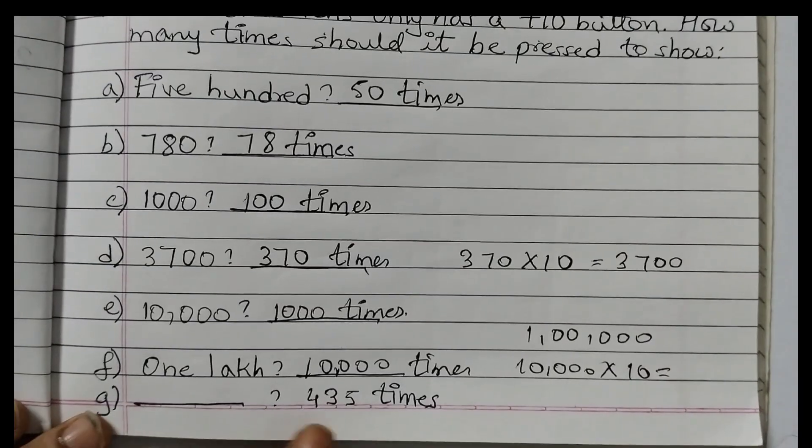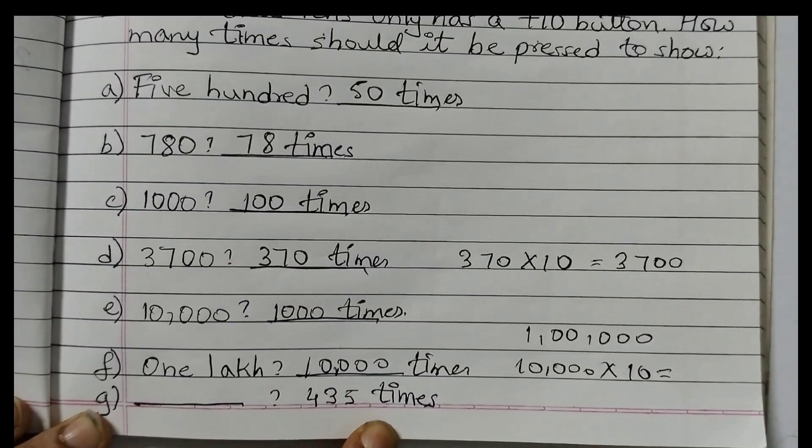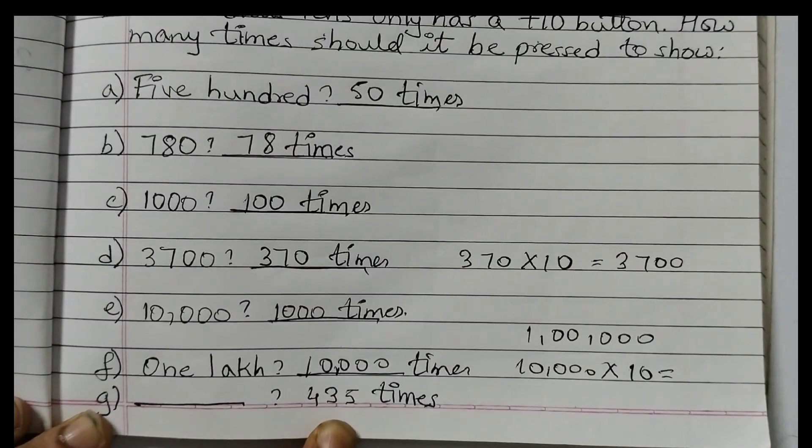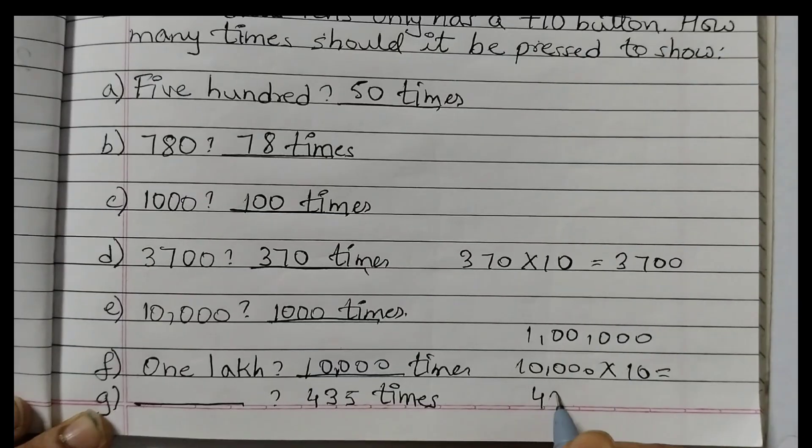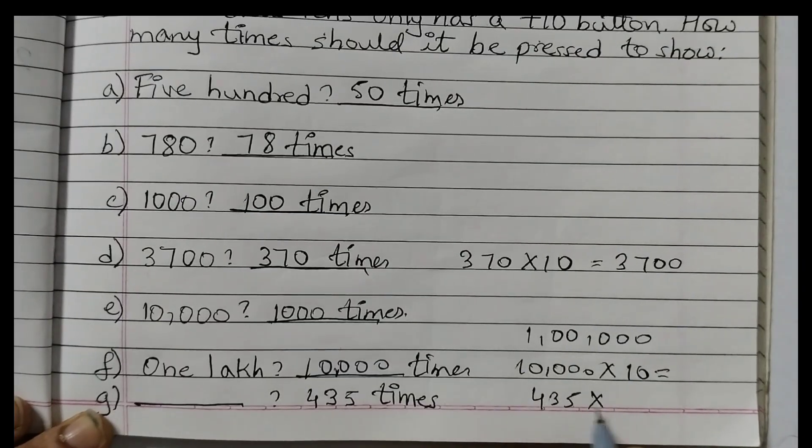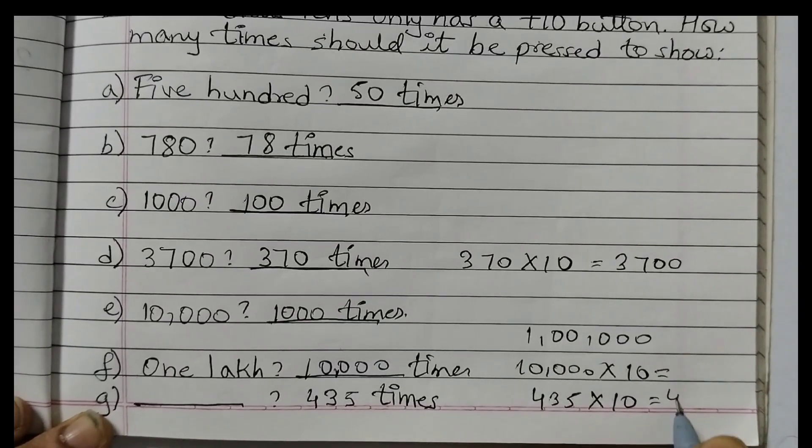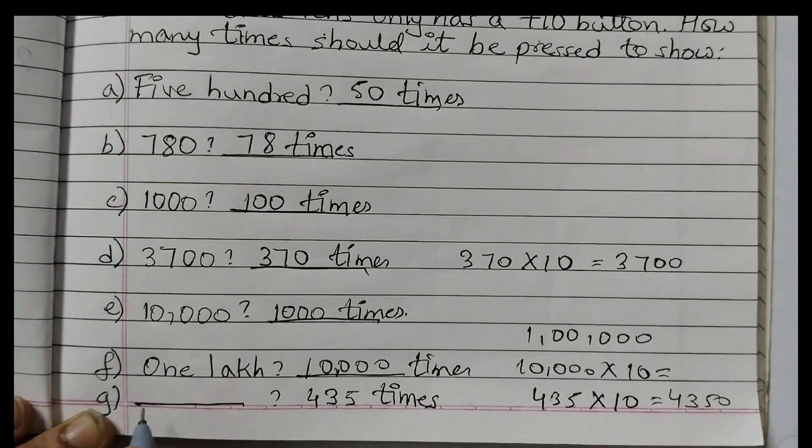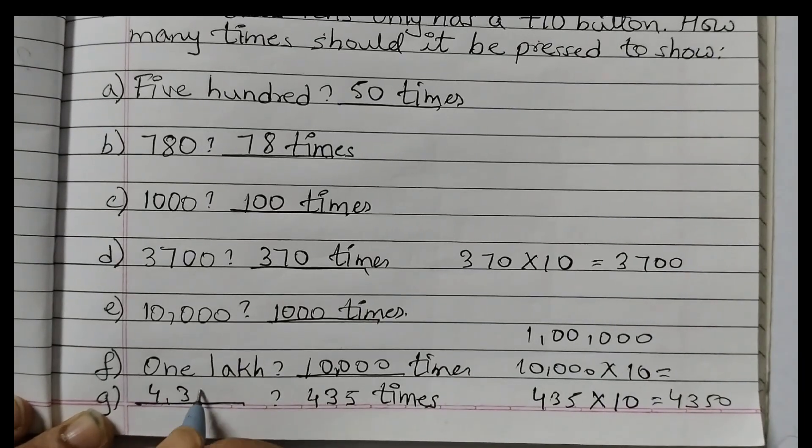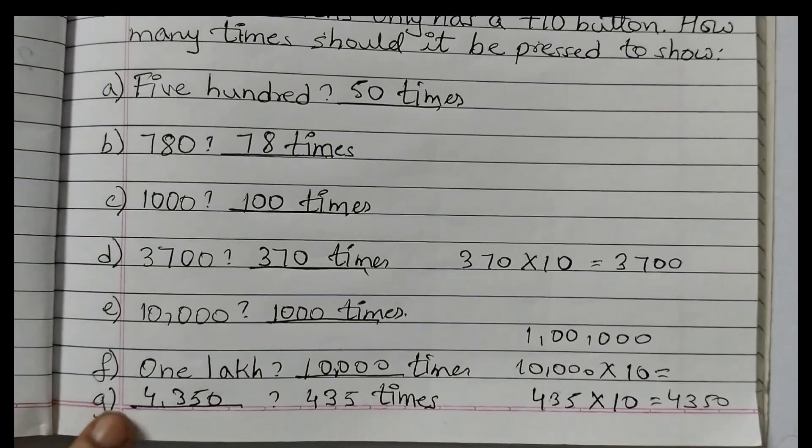The last one is 435 times. If you press the plus 10 button, what number you will get? So 435 into 10, and that will be 4,350.